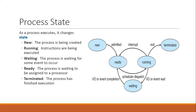Process states. As a process executes and progresses during execution, it changes states. A state represents the current process activity within the system. A process may be in either one of the following states: New state — this is the state when a process is being created. Running state — this state defines when program instructions are being executed by the processor.